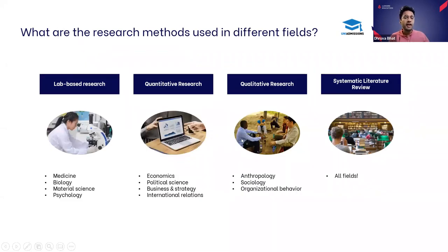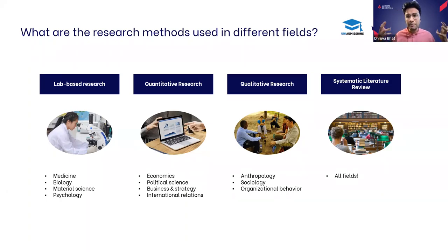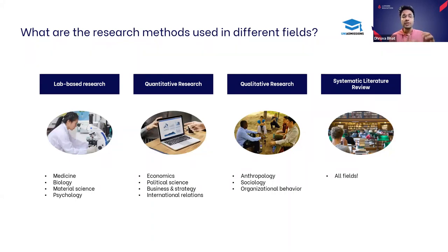There are different kinds of research. The first is lab-based research — what most people picture: people in white lab coats mixing up chemicals and causing things to explode. It's a really important kind of research in physics, chemistry, medicine, biology, and psychology — anywhere you need carefully controlled experiments to test a hypothesis.